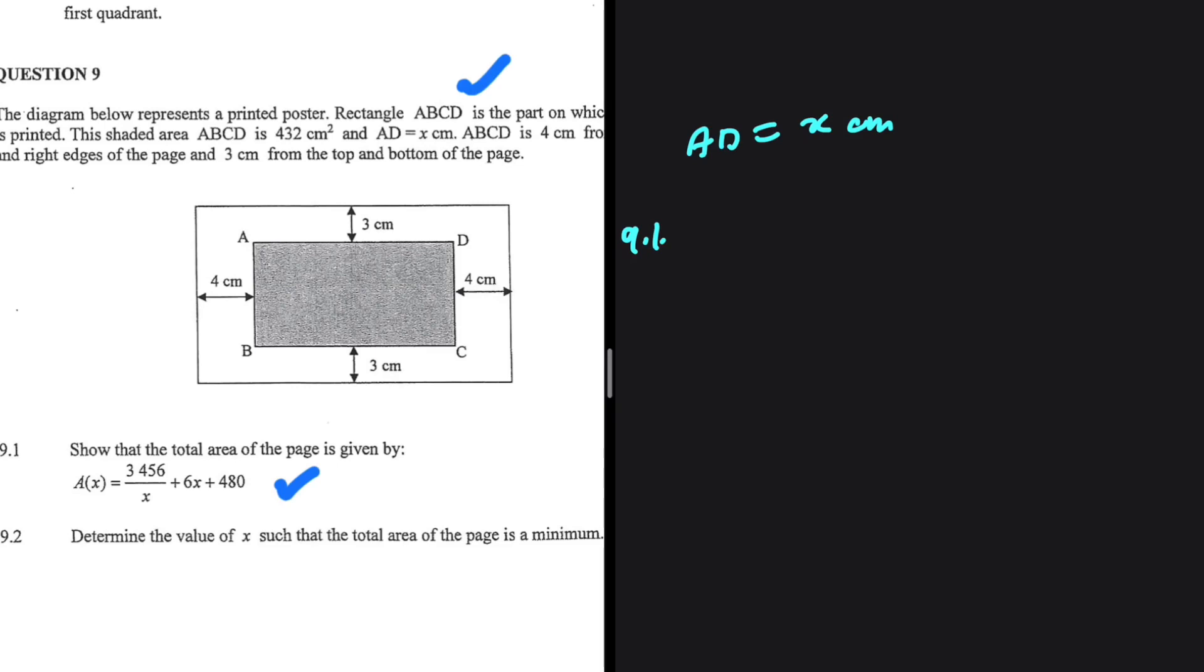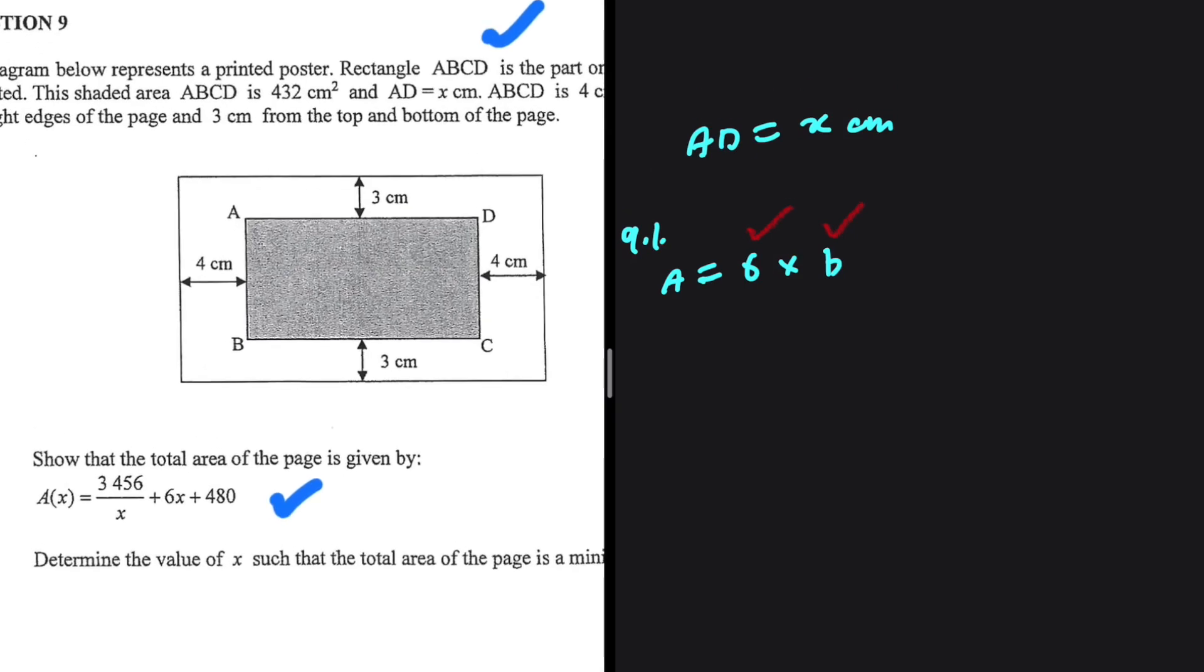We have a rectangle, so the area is length multiplied by breadth. Let's express the length and breadth in terms of x and multiply to find the total area.